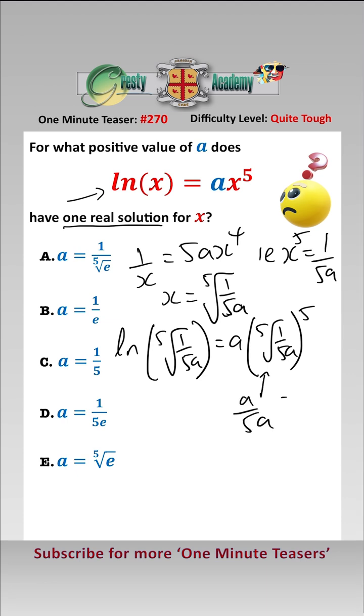Here the fifth root we can write as a fifth and take it out so that gives us 1 fifth log of 1 over 5a. The 1 fifth cancels leaving us that log of 1 over 5a must equal 1.